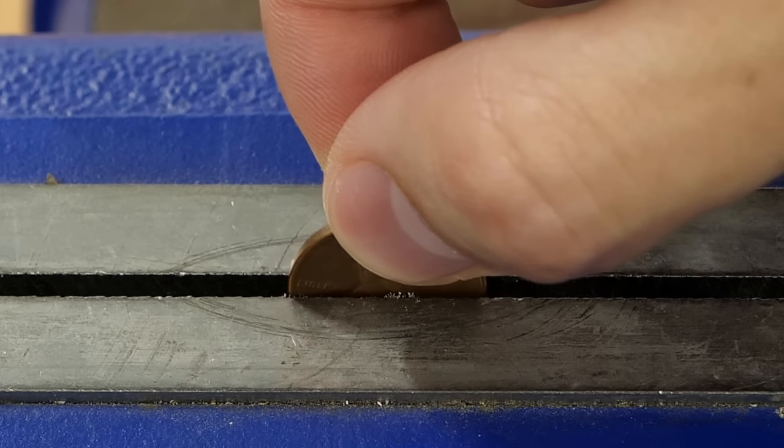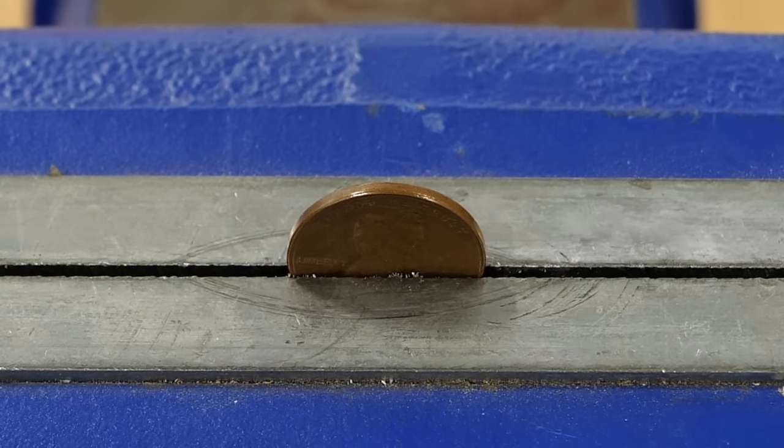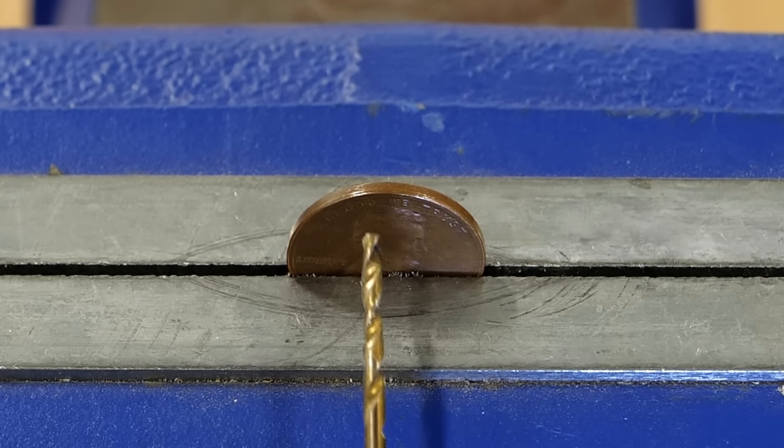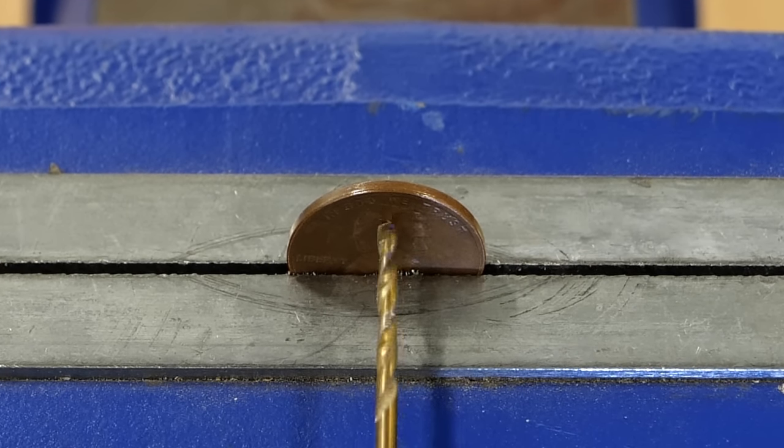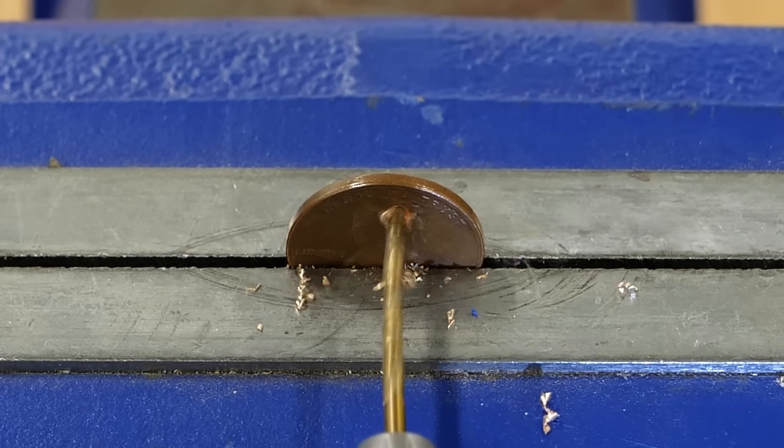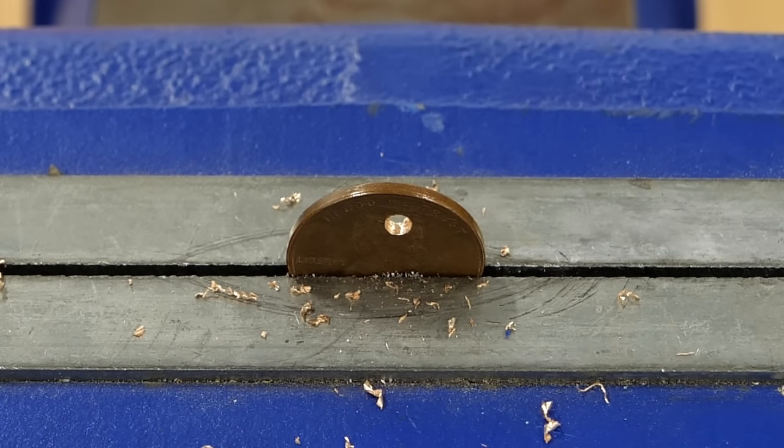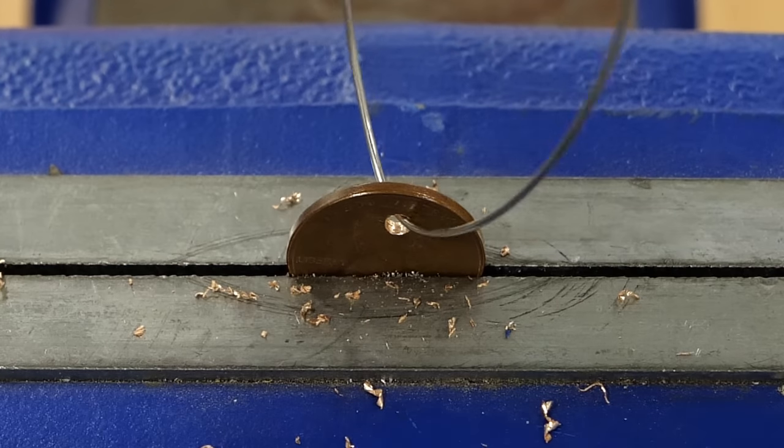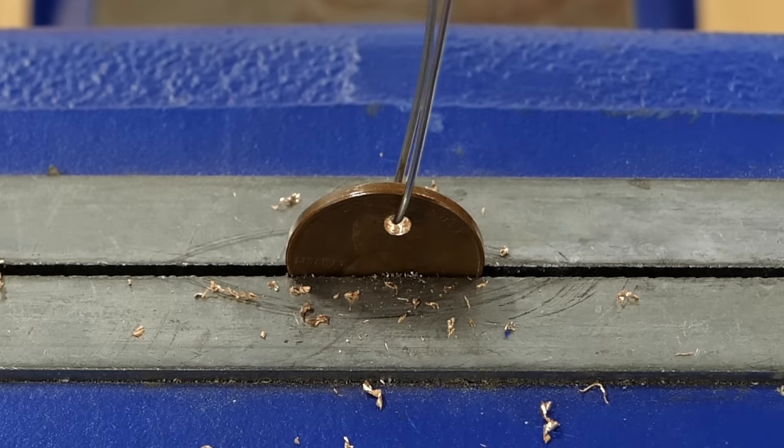Now, I can prep the penny, and all I need to do is clamp it down and drill a small hole in it. I'll then put some metal wire through the hole, and the penny's good to go.